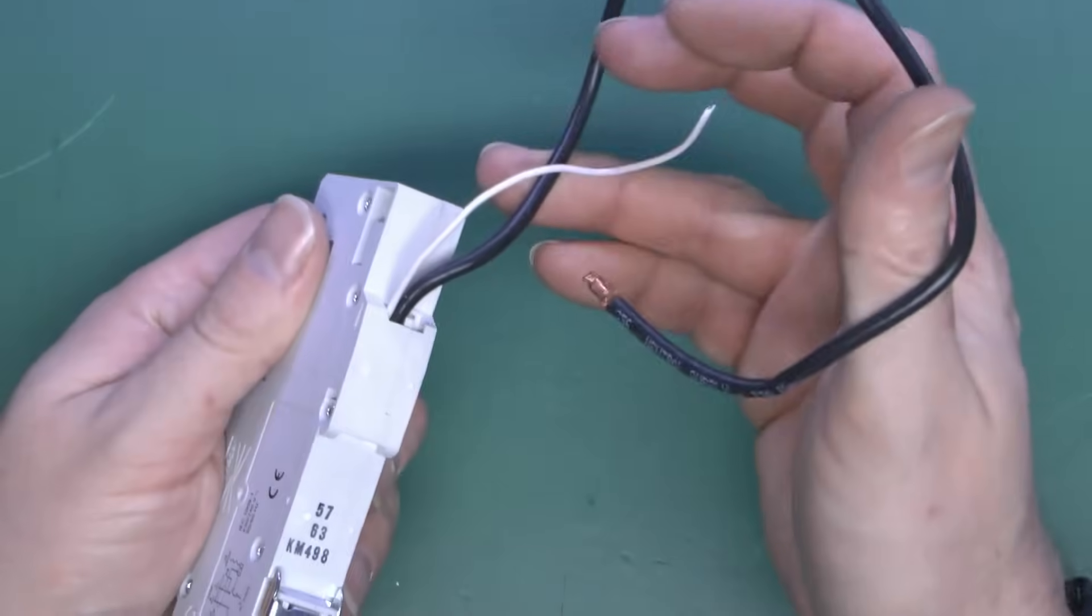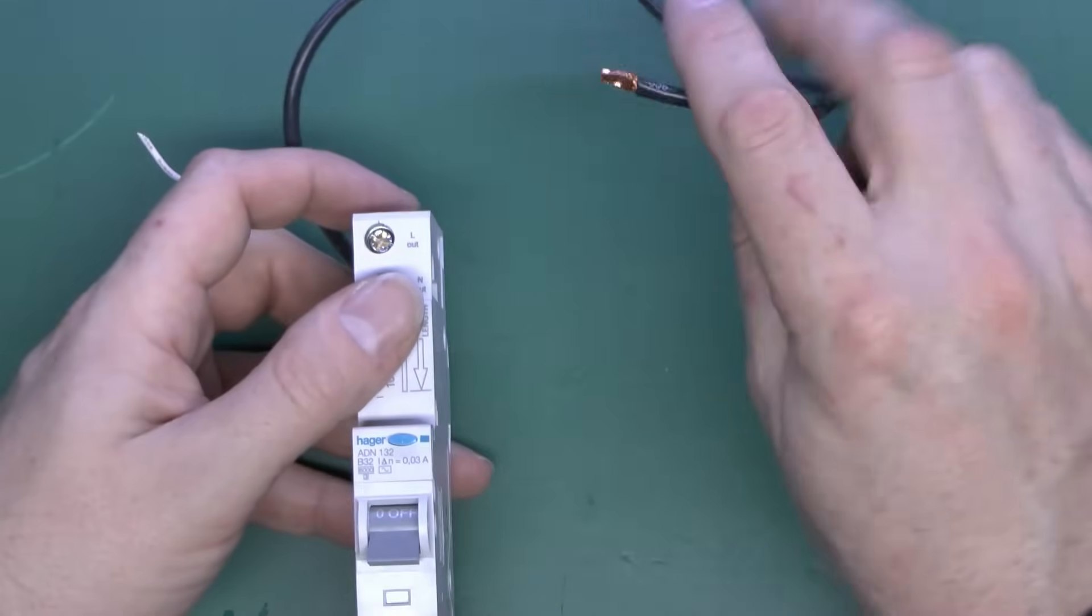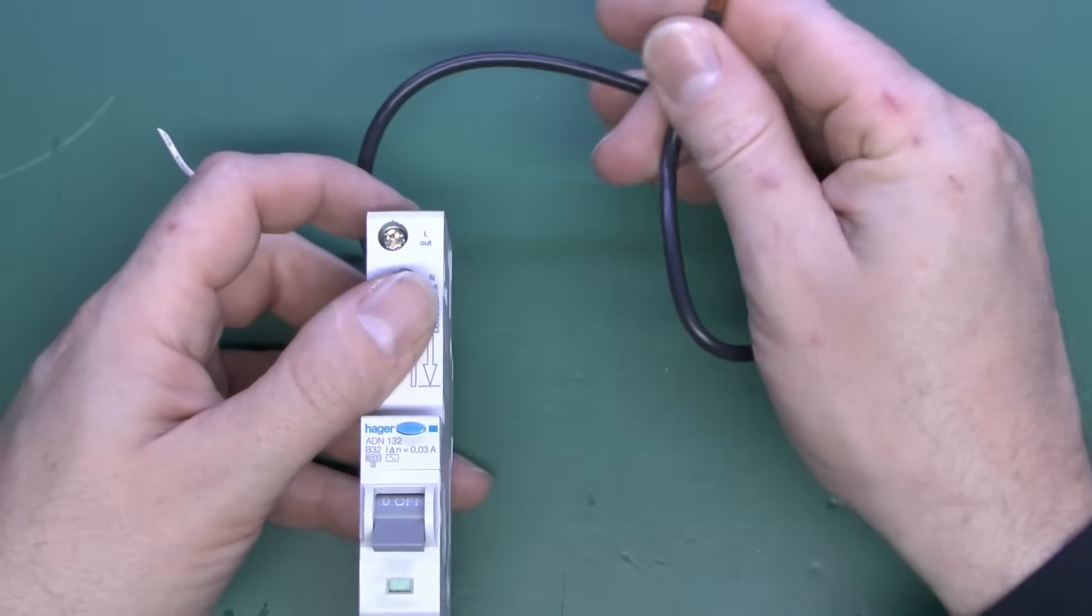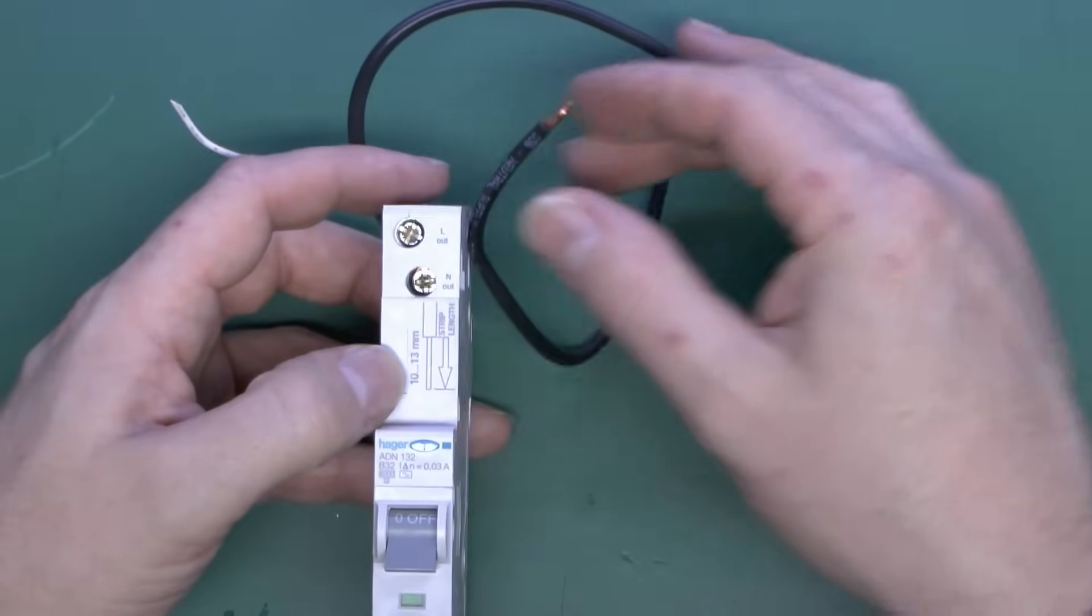So we've got this black flying lead coming out of here, and this is what we connect to the neutral bar on the consumer unit. So that's basically the neutral in, if you want to consider it like that.